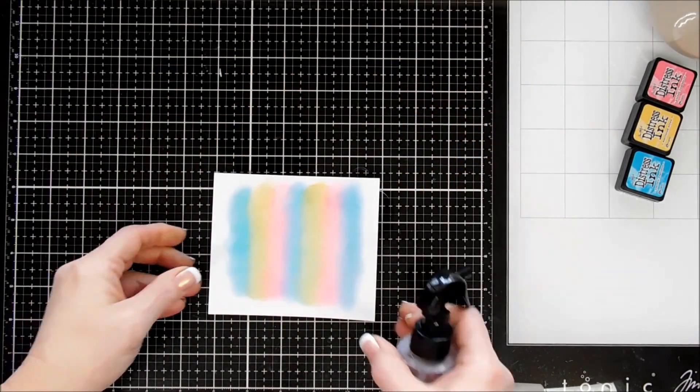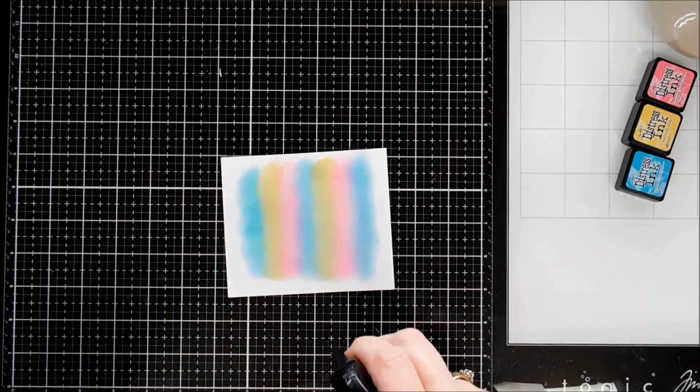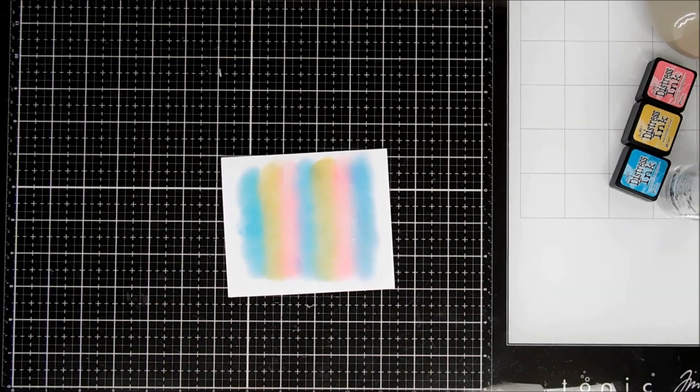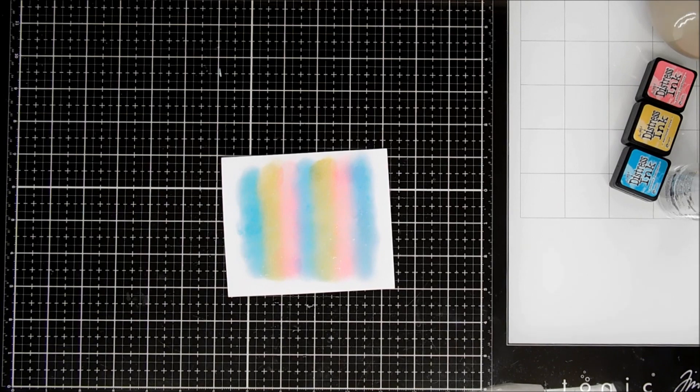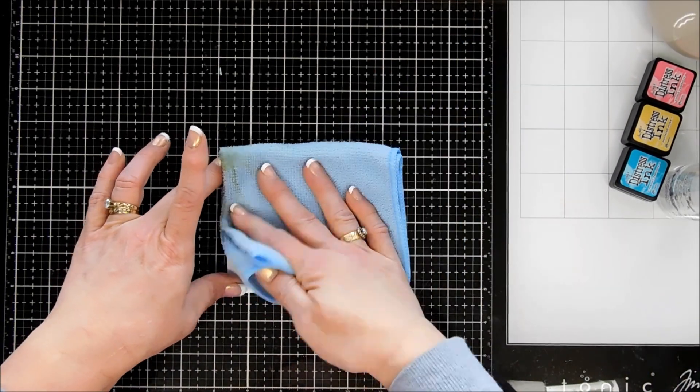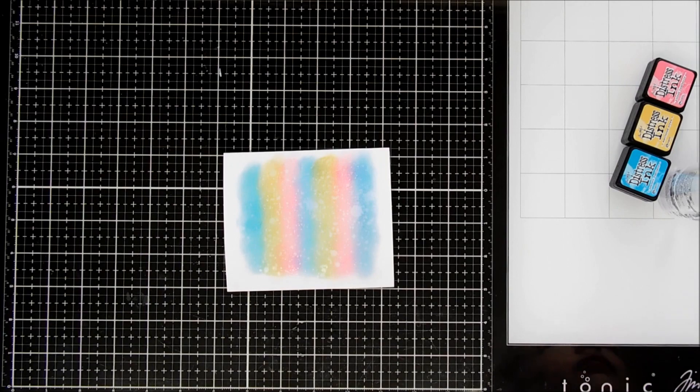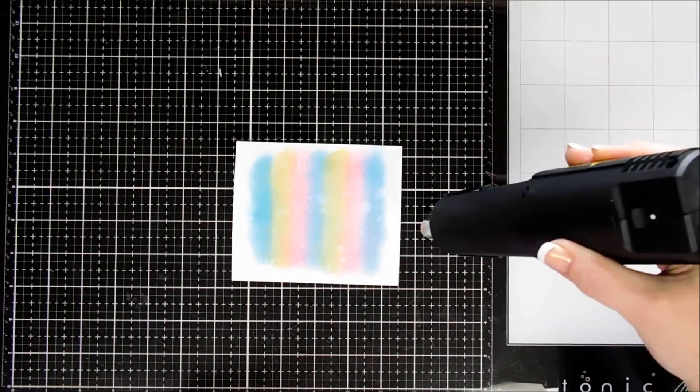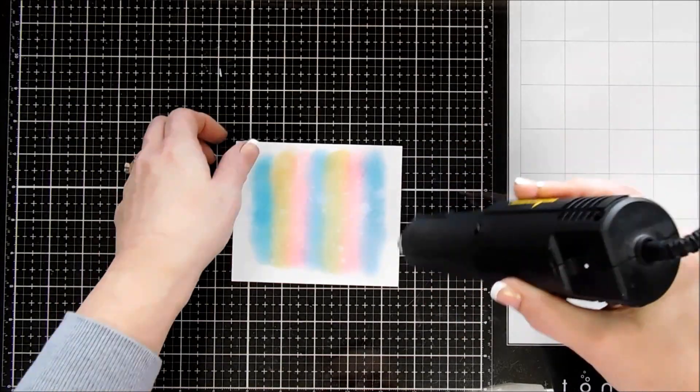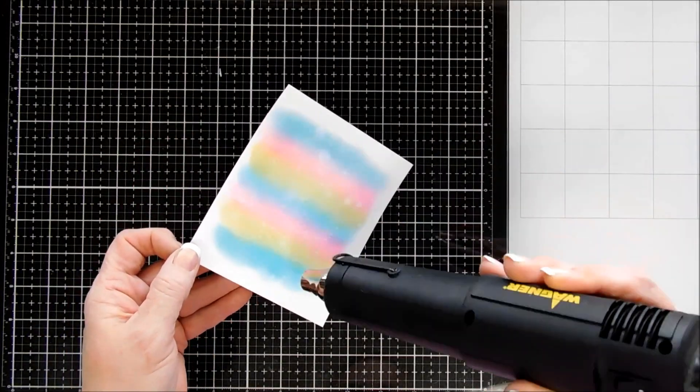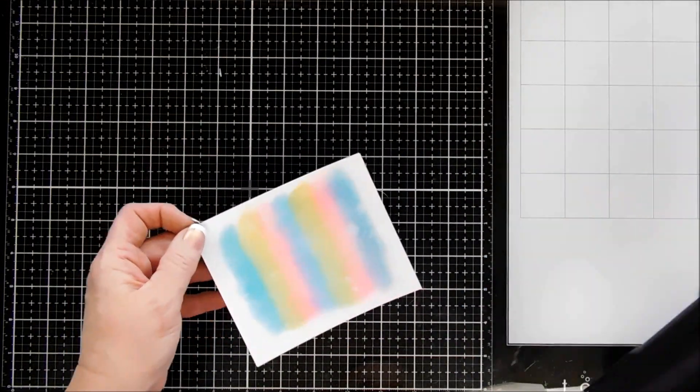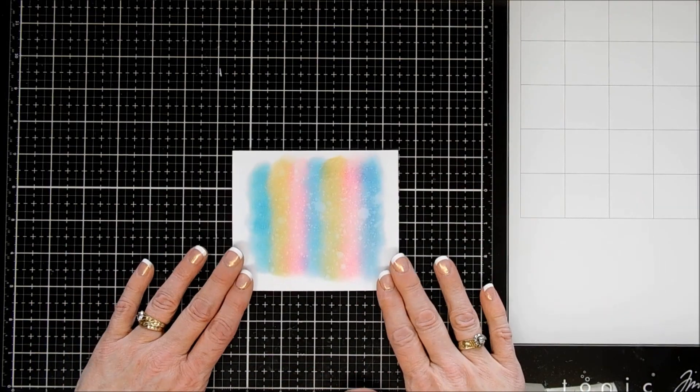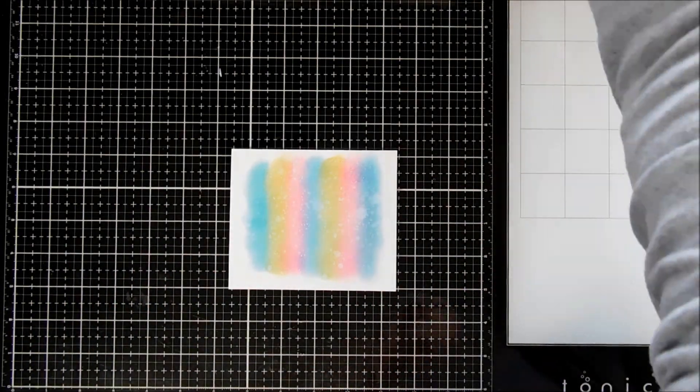Once this is done we're going to add a little texture by using our Distress Sprayer. I just added some water droplets and I'm going to dab up the excess with a little towel here. We're going to be doing some heat embossing so I want to make sure that this panel is nice and dry. So I brought in my heat gun. I'm just making sure that it's nice and dry. We don't want any wet spots because we're going to do our stamping on here.